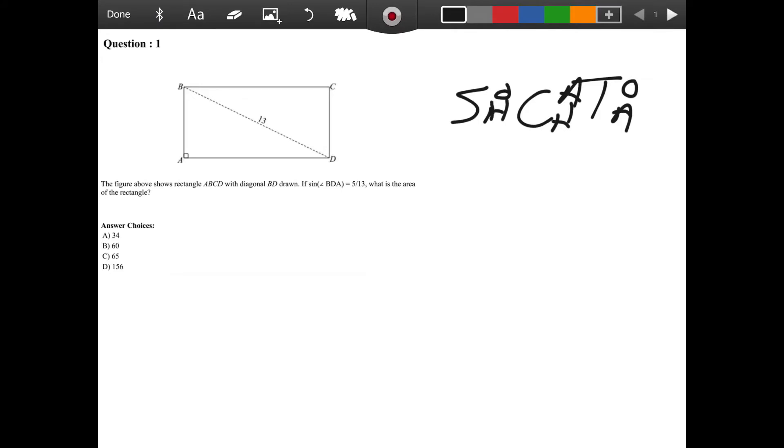So here the figure shows a rectangle. If sine angle BDA is 5 over 13, what is the area of this rectangle? Now, I don't like to think of things in terms of BDA, so instead I'm going to put a theta. Basically, you have the sine of theta equals 5 over 13, and based on our SOHCAHTOA, we know that sine means opposite over hypotenuse.